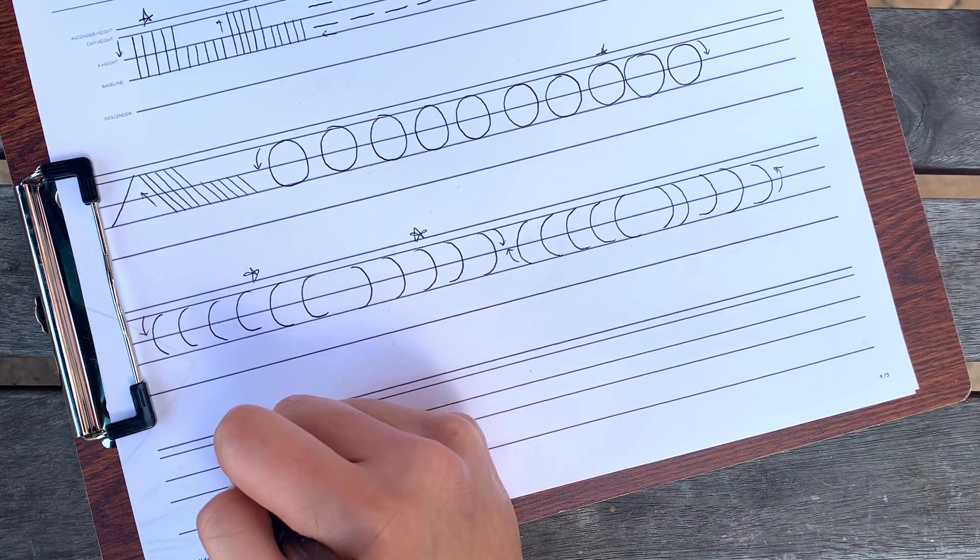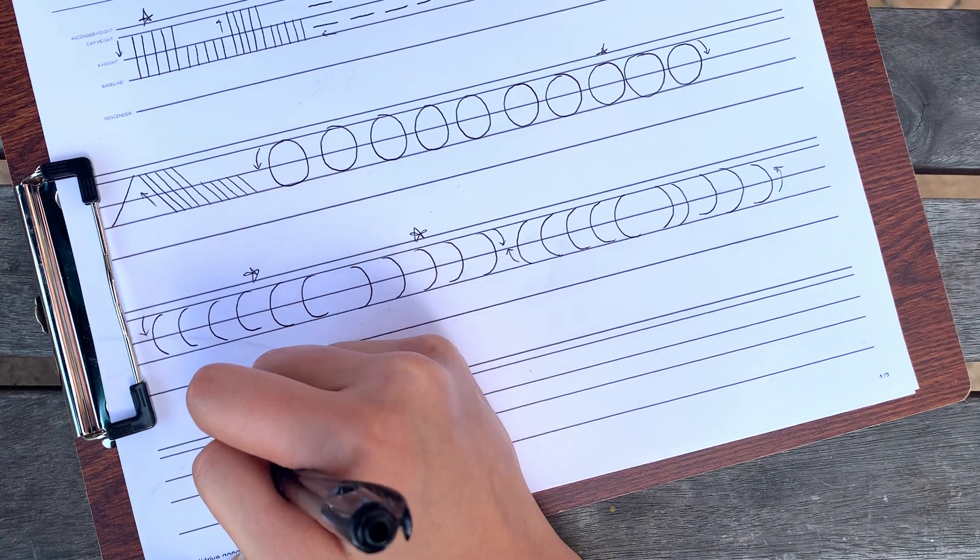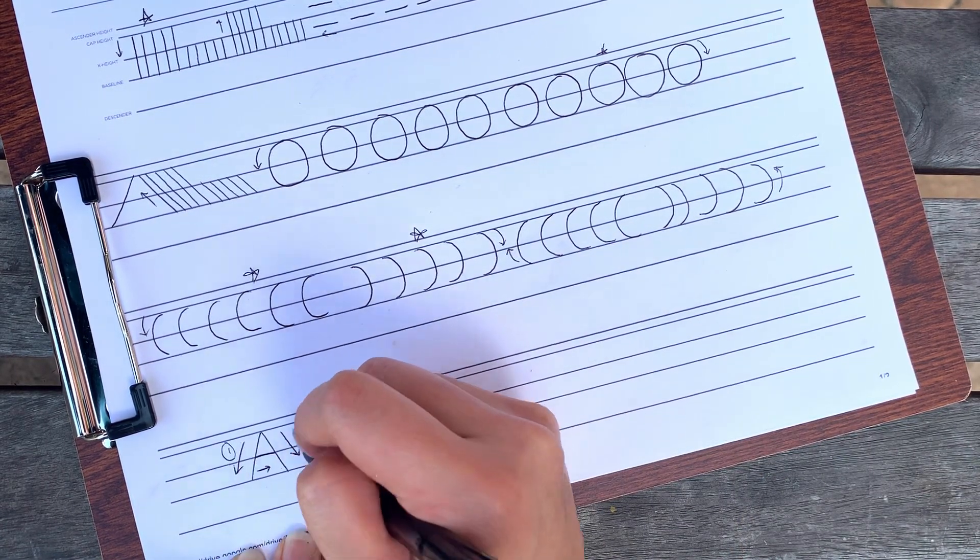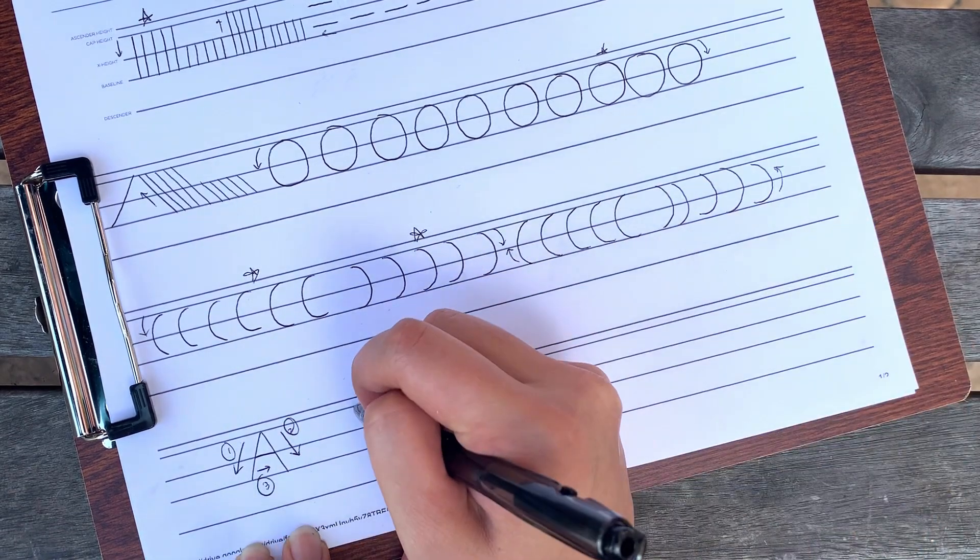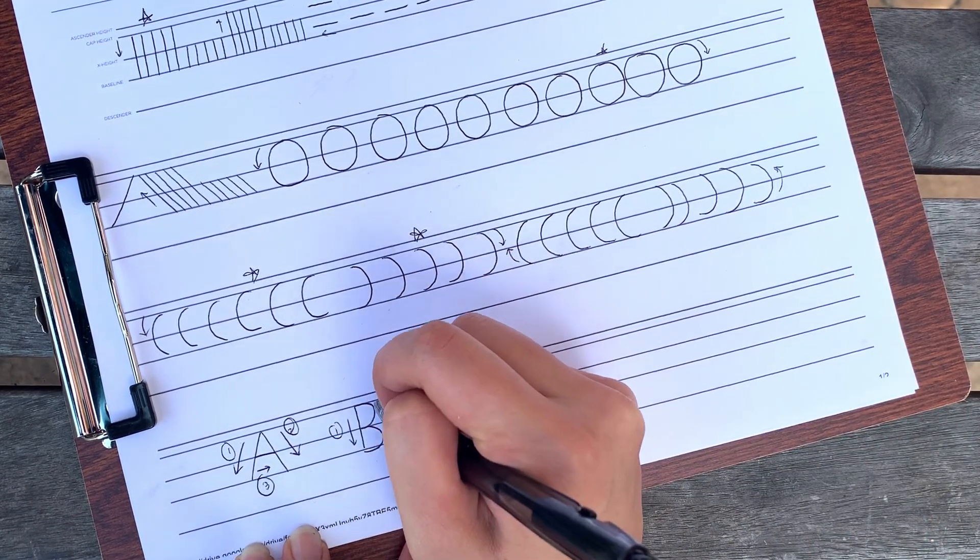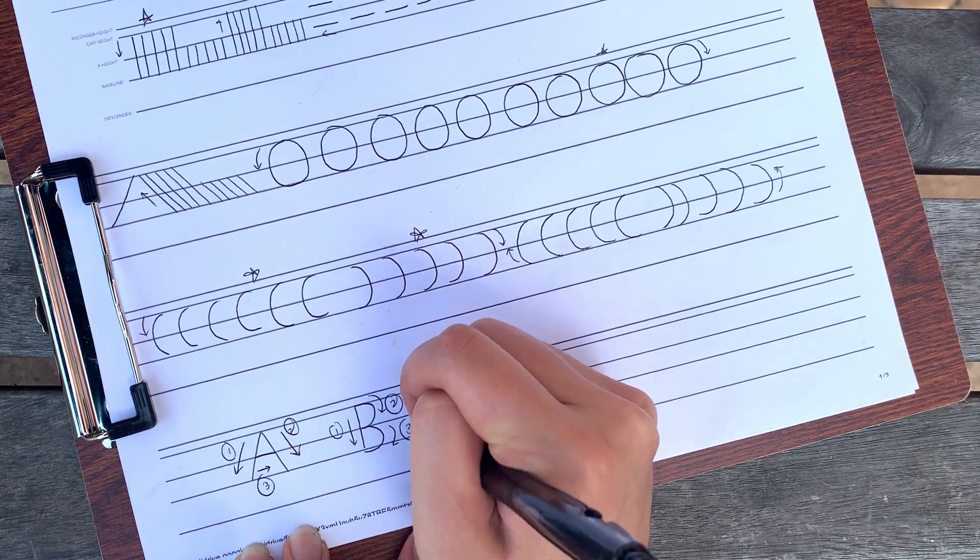So we use all of these shapes that we drew in some way to form each of the letters in the alphabet. For example, A, B, and C are just a combination of all these shapes. As we begin to form the letters, I want you to apply your starred methods to write out each of the letters.